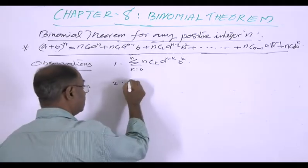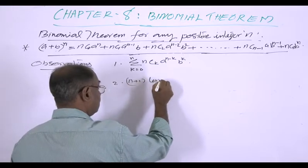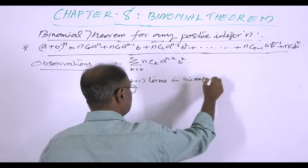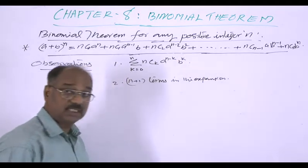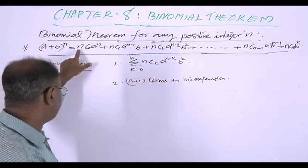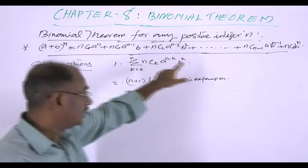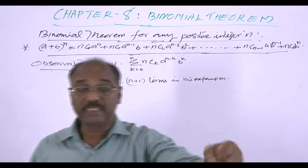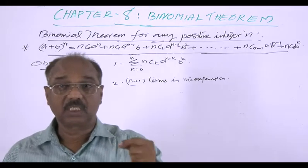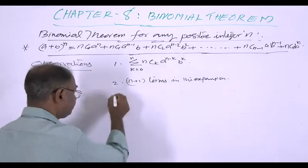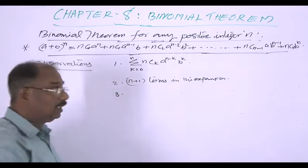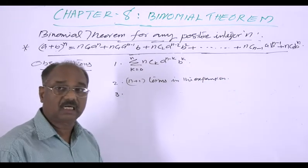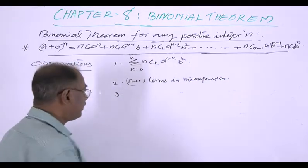The second observation is that there are n + 1 terms. Starting from nC0 and ending with nCn — that is, from k = 0 to k = n — there are clearly n + 1 terms. Third, nC0, nC1, nC2, and so on up to nCn are called the binomial coefficients.